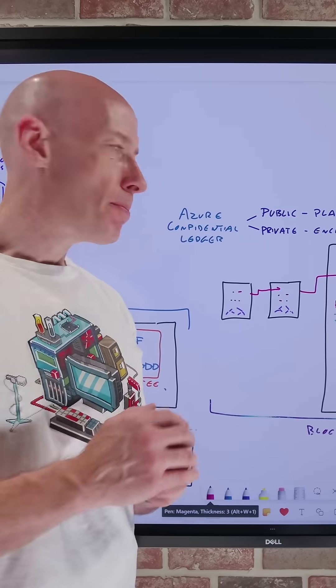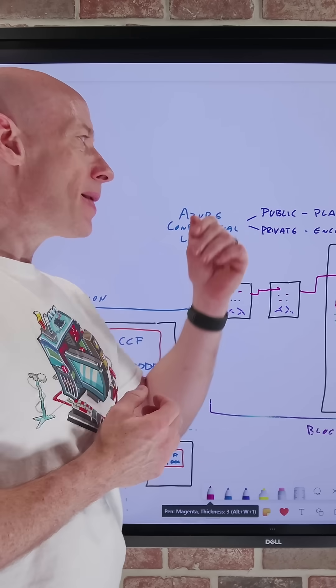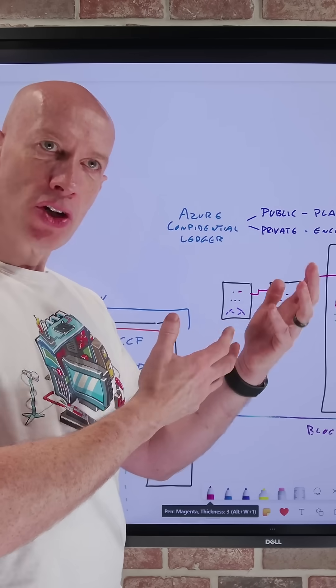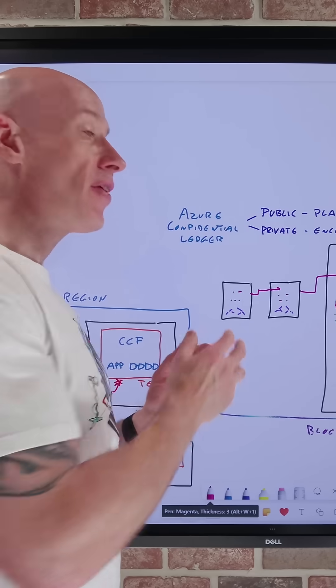In this short, we're going to quickly cover the benefits of Azure Confidential Ledger. This has both a public and private version. Public, the content is stored in plain text. Private, it is encrypted.